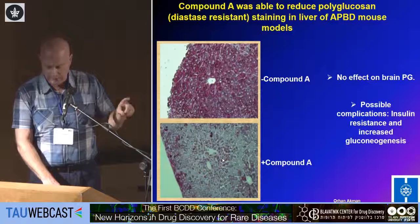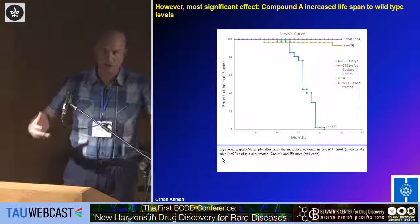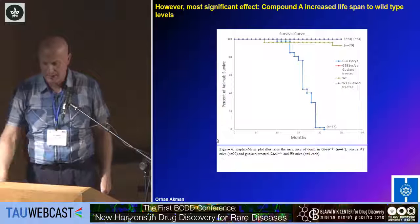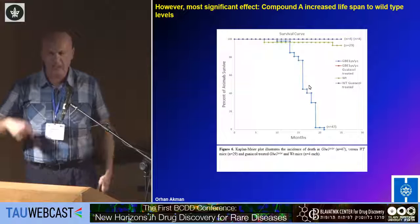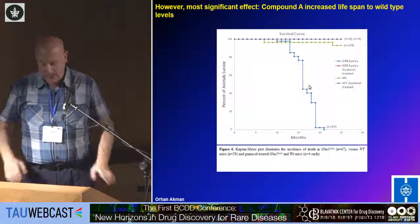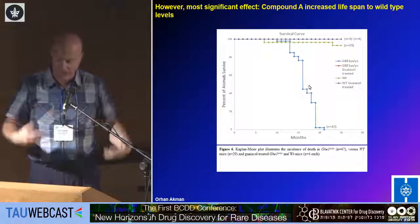Even though it affected polyglucosans only in the liver, what drove us to initiate clinical trials was that Compound A completely recovered the lifespan of the mice. Our experts tell us this is a very good sign. It also corrected penile prolapse in male mice without any side effects. We don't expect it to completely cure the disease, but definitely to ameliorate it. So, based on high-throughput screening, we now have clinical trials using Compound A.